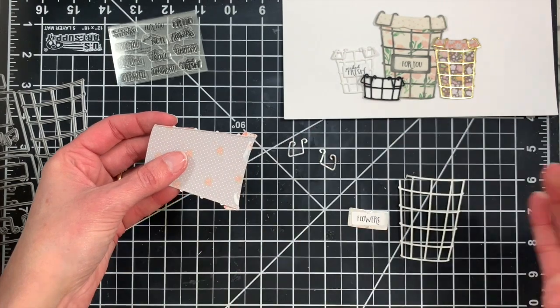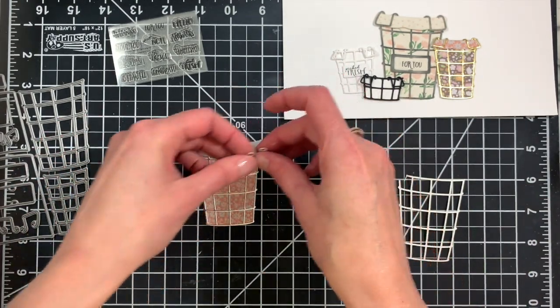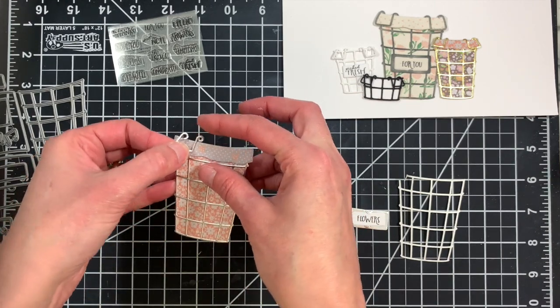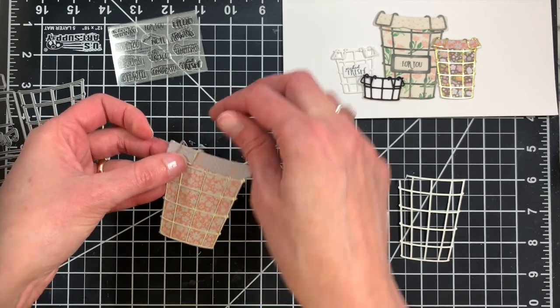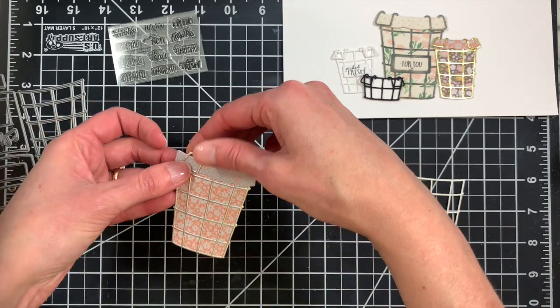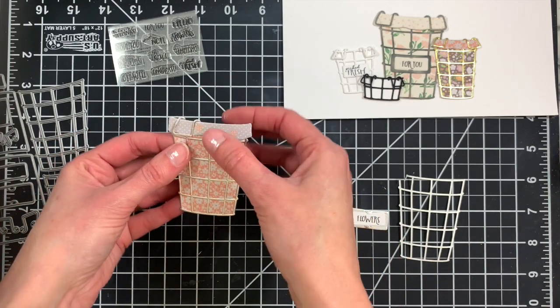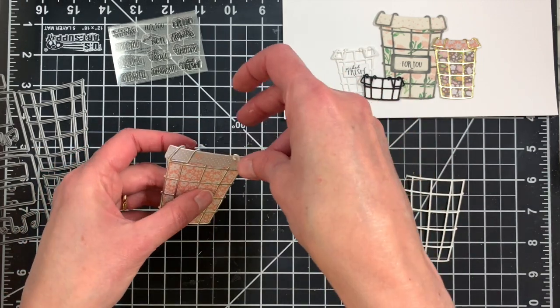And then take those handles and just slip the little loops over top of the top edge of your basket. They should just slip kind of right on there, and then you can just give them a little squeeze to adhere those to that liquid adhesive that you put on the back side.